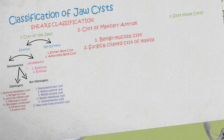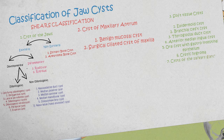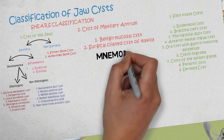The soft tissue cysts include the epidermoid cyst, the branchial cleft cyst, the thyroglossal duct cyst, the anterior median lingual cyst, oral cyst with gastrointestinal epithelium, cystic hygroma, cysts of the salivary glands, parasitic cysts, and dermoid cyst.